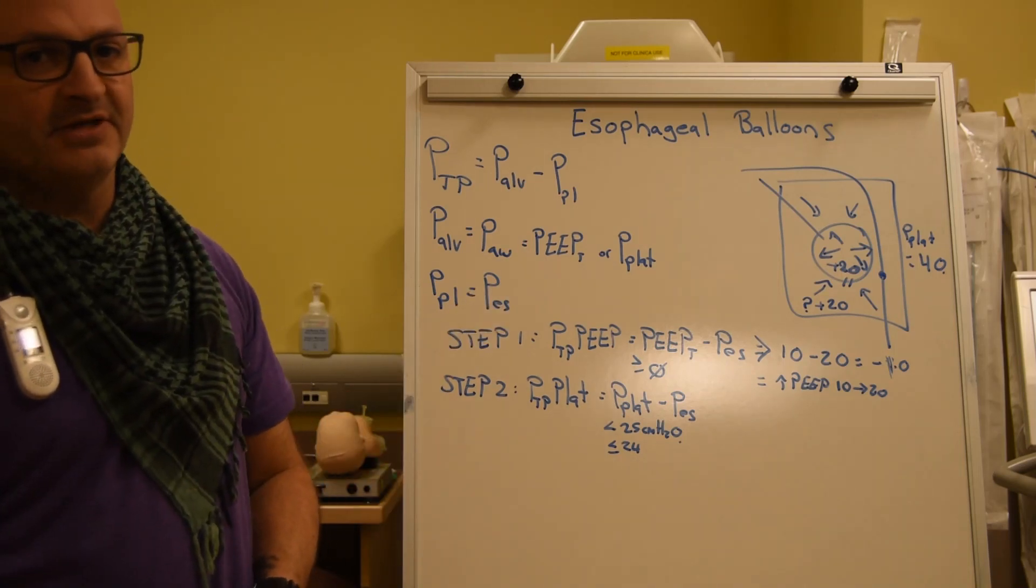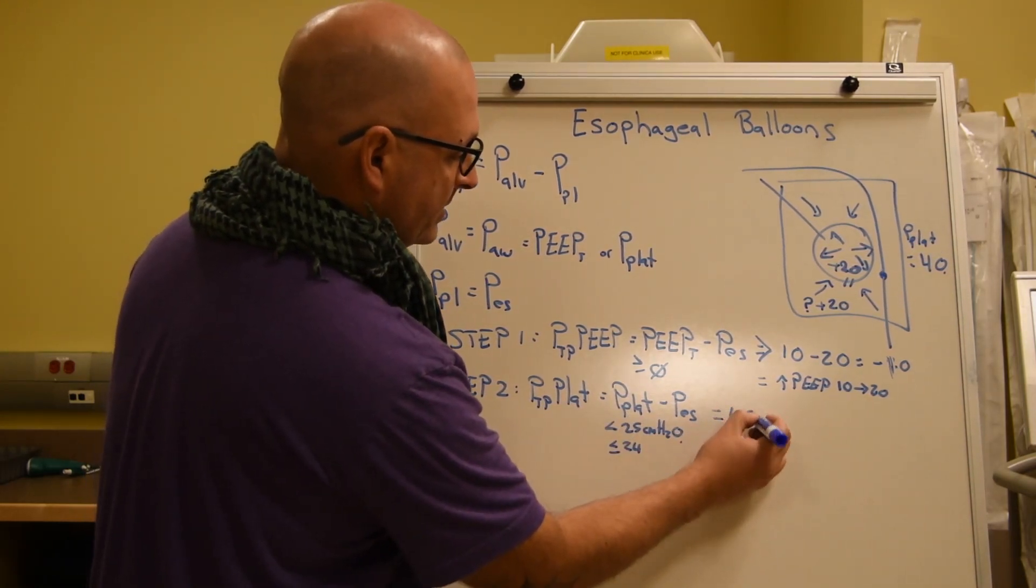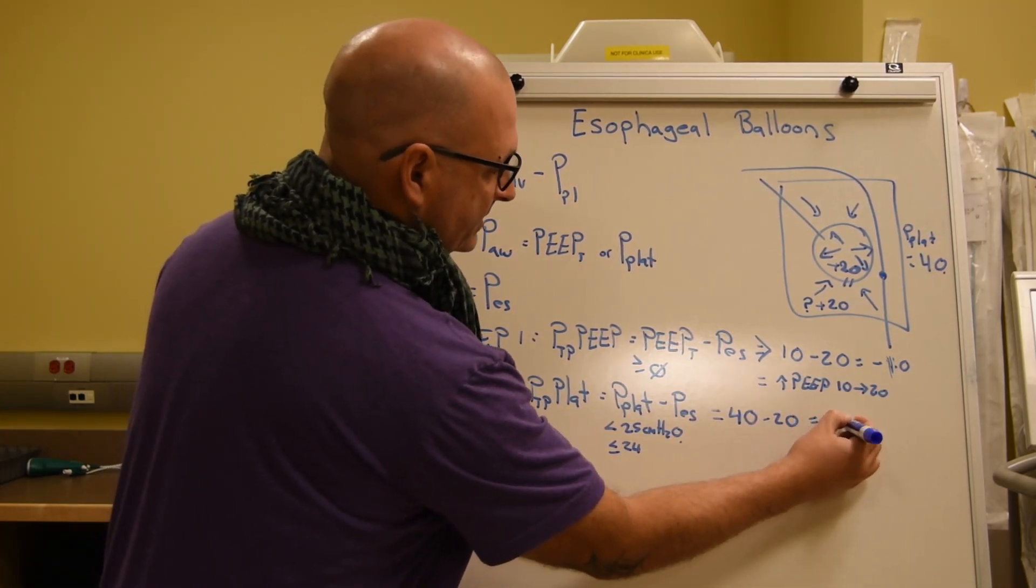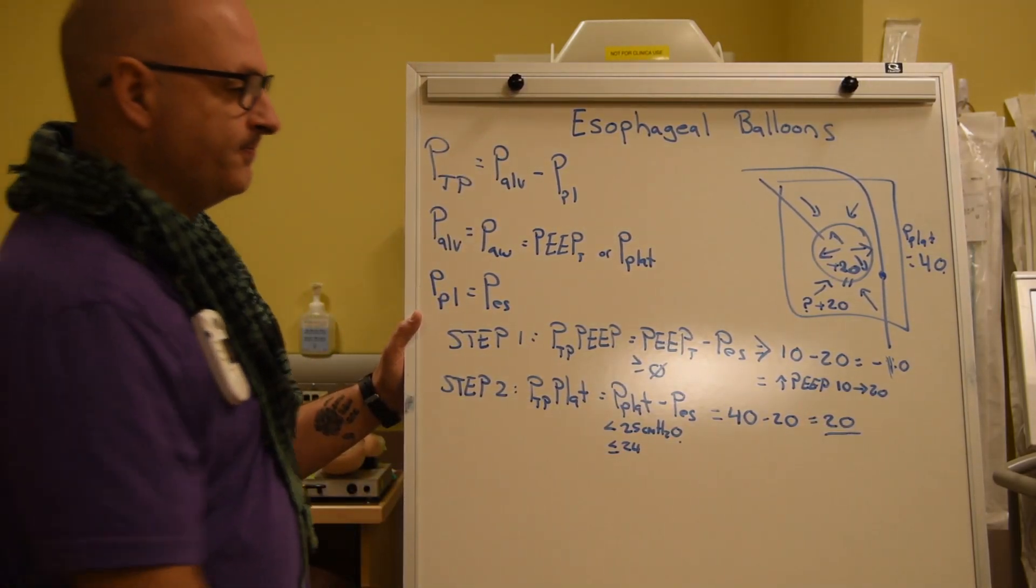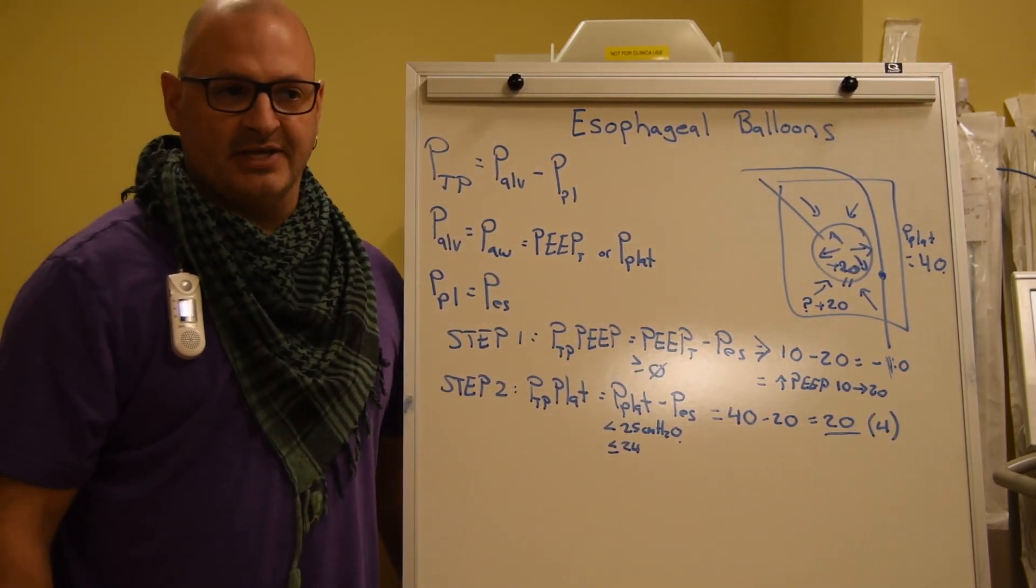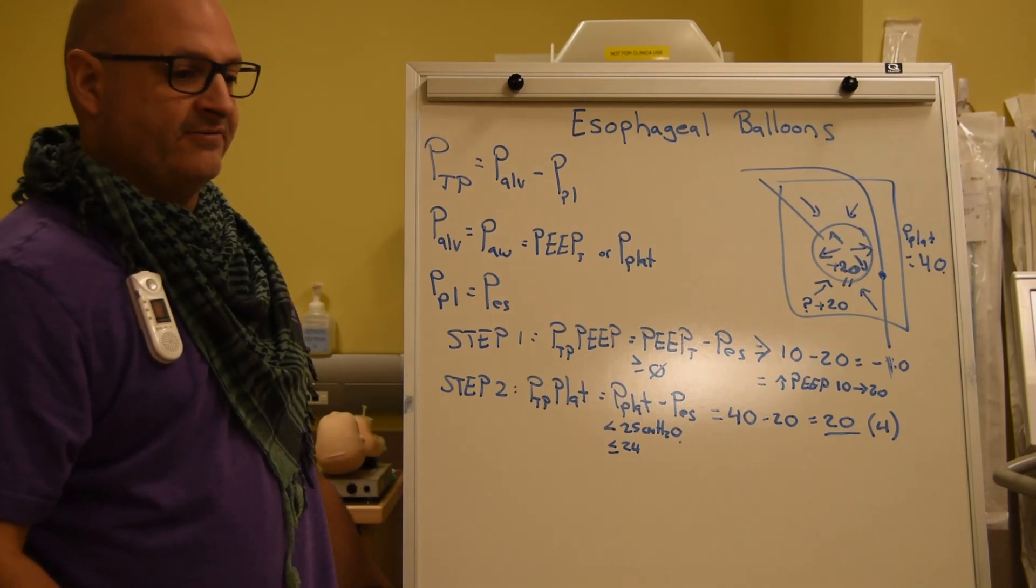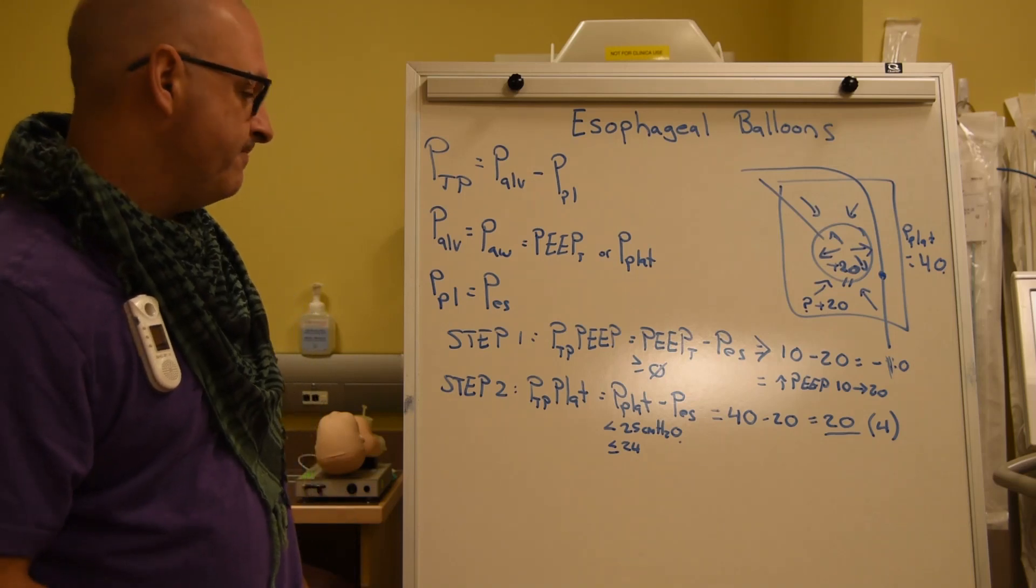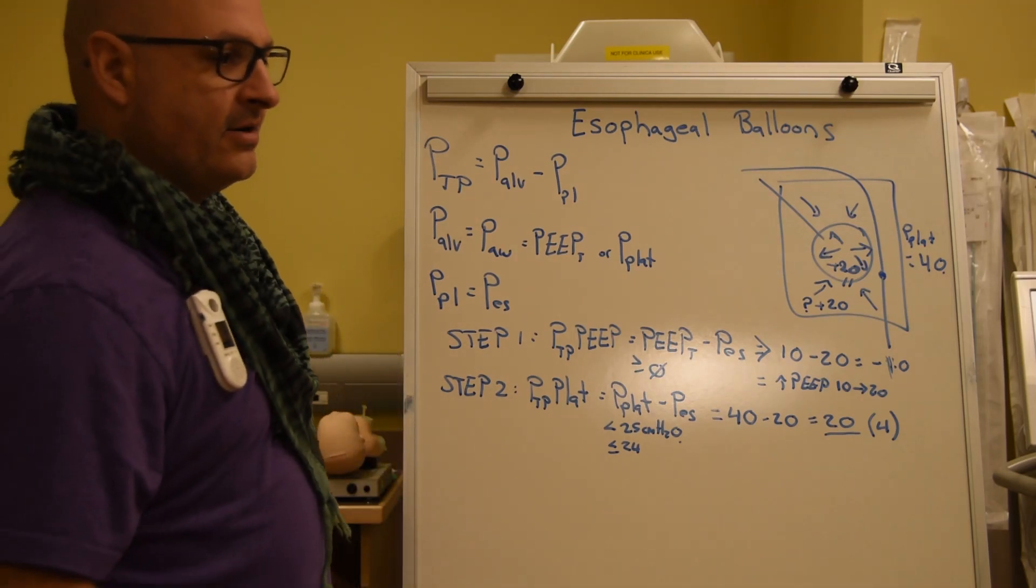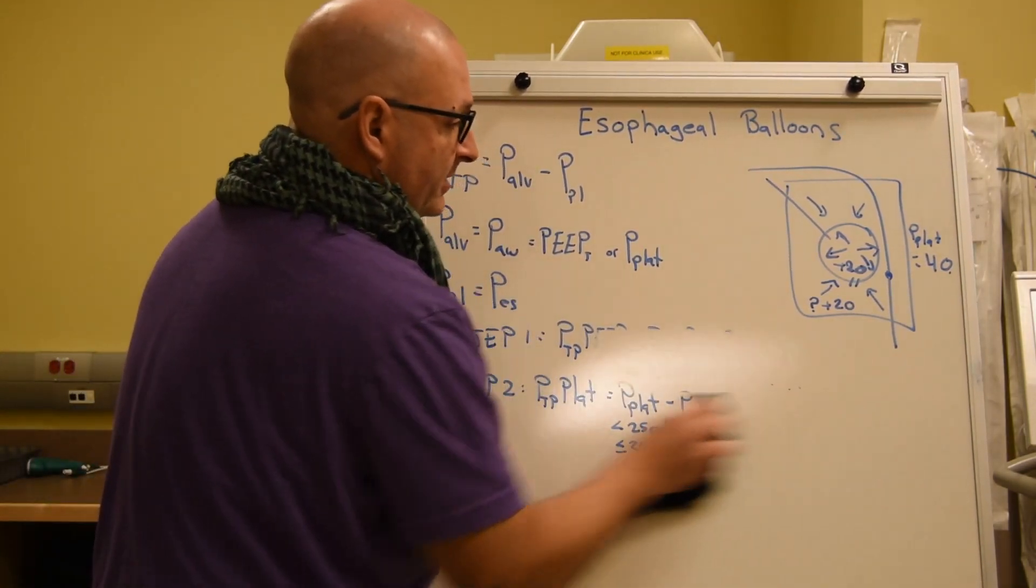But now we know the other side of the equation. Let's plug that in. Our plateau pressure is 40, and our esophageal pressure is 20. This gives us a value of 20. What does that mean? That means we have four centimeters of water to actually play with to either optimize our oxygenation, we could go up on our PEEP, or if we have ventilation issues, we could go up on our PIP. Now, what we need to do is have some examples of what kind of patients we would actually see and we could utilize this on.